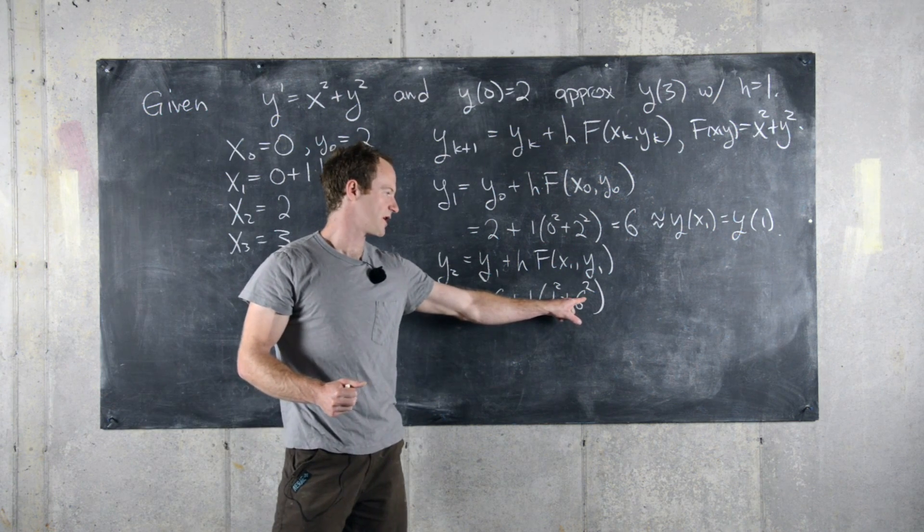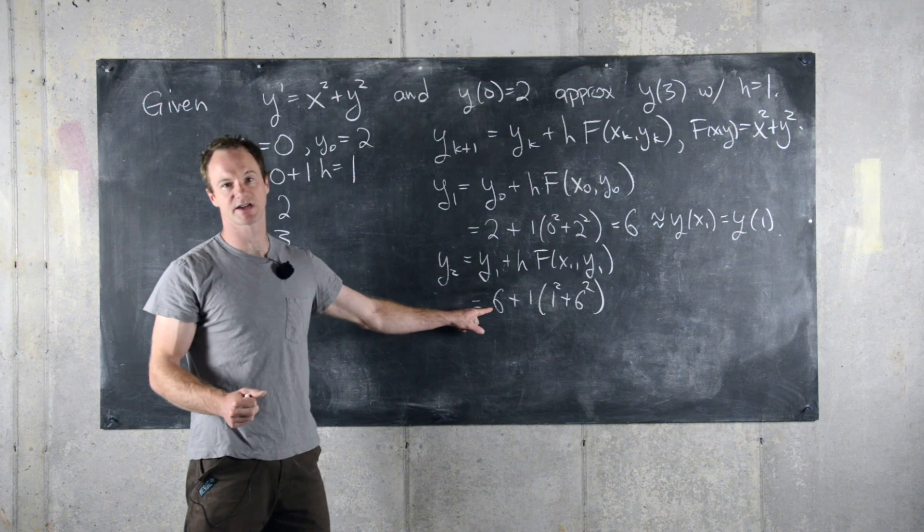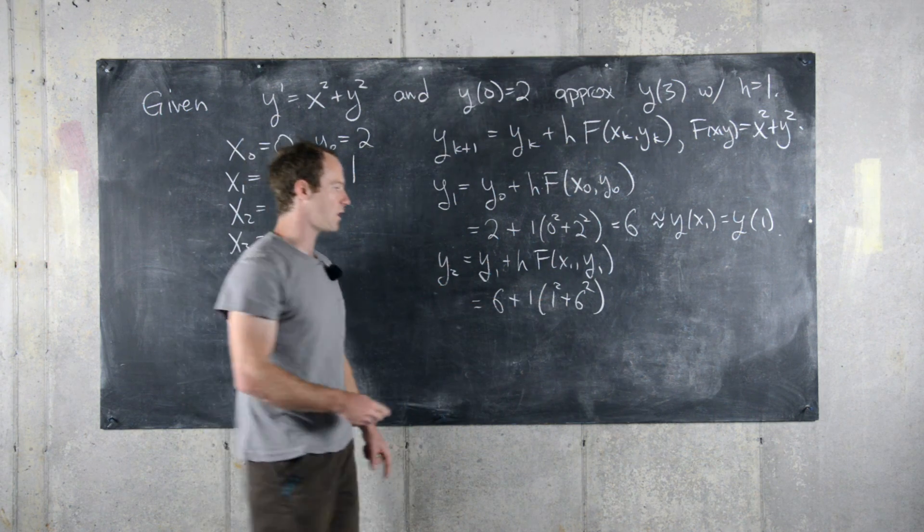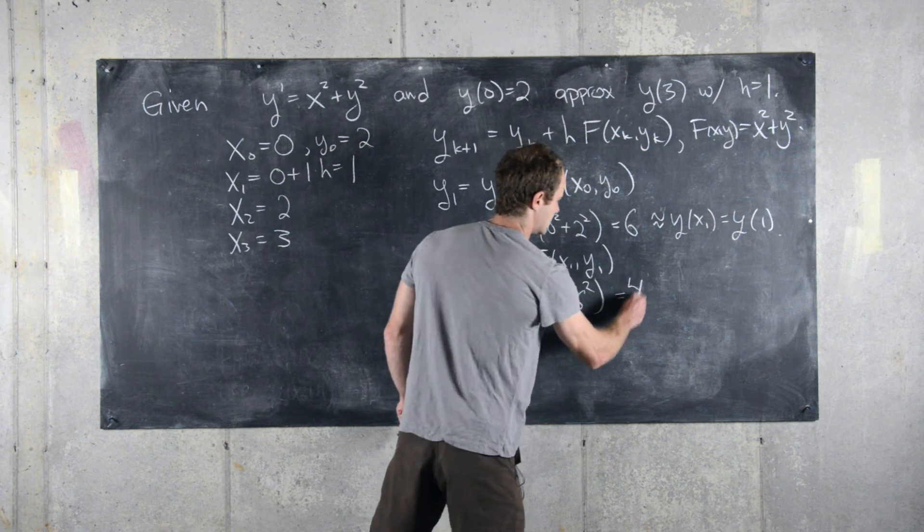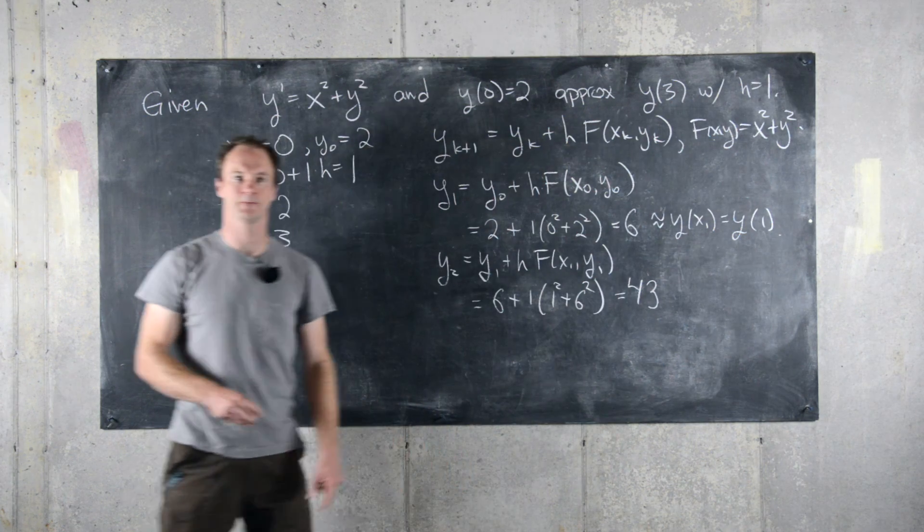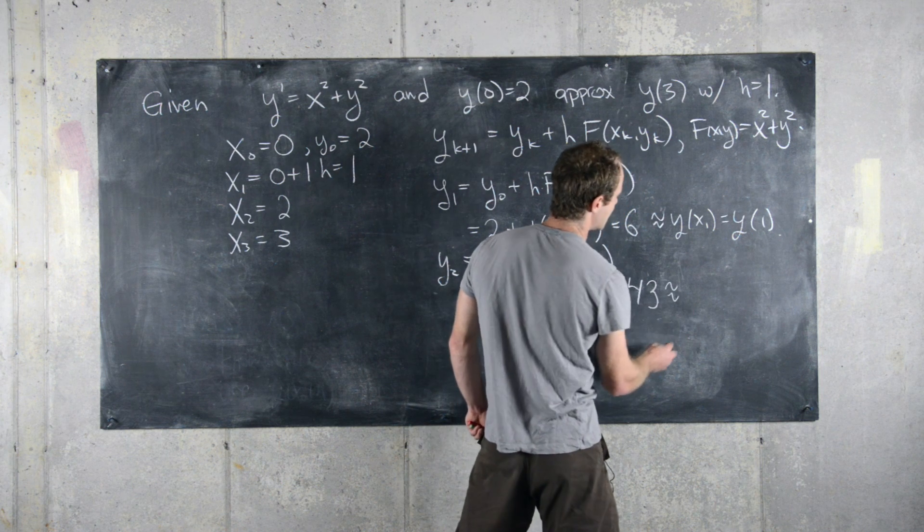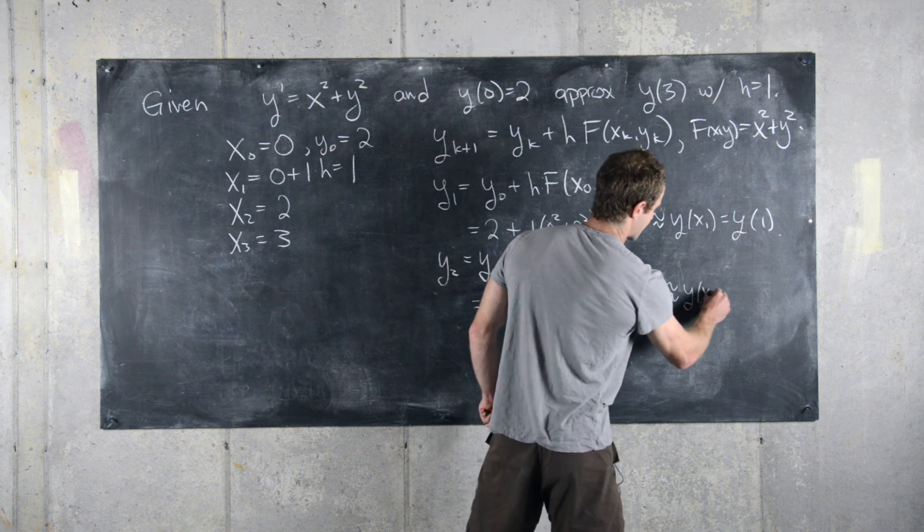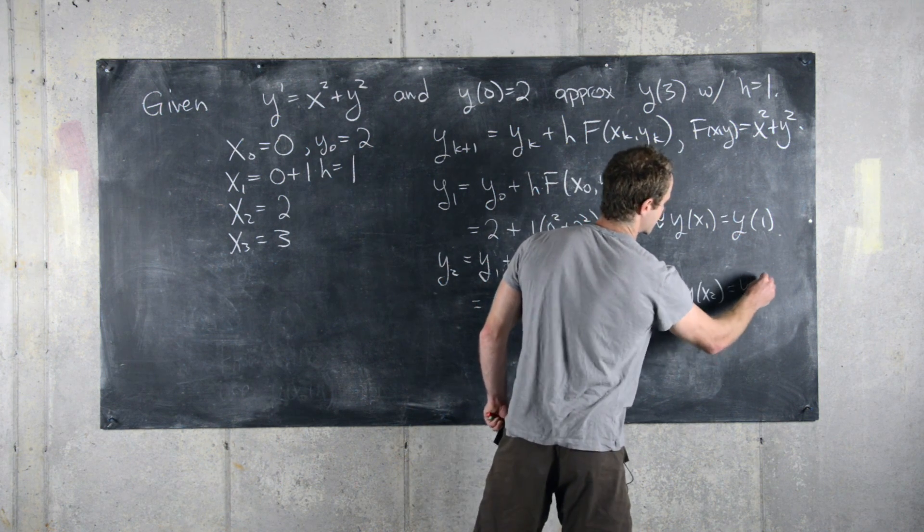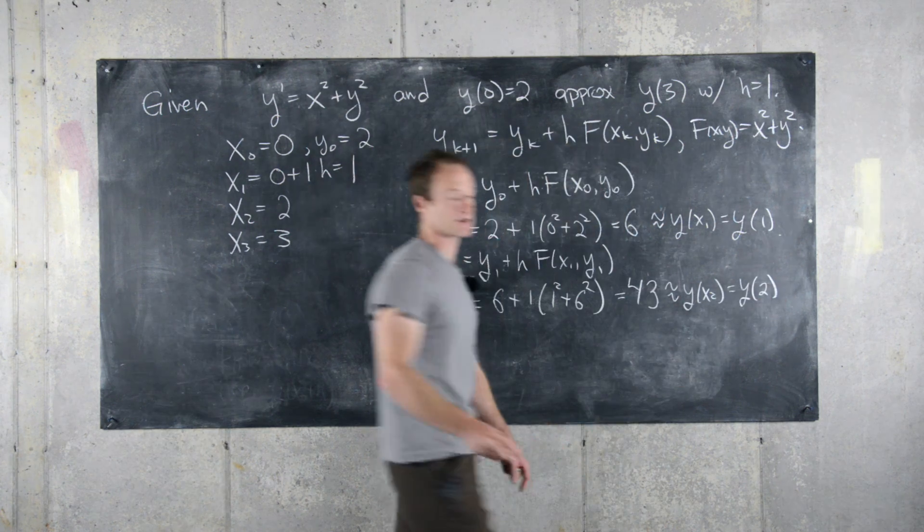We have six squared is 36 plus six is 42 plus one is 43, and so this is going to be approximately equal to y of x two, which in this case is y of two because of our step size.